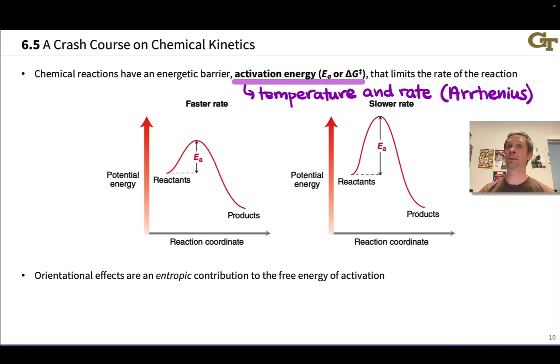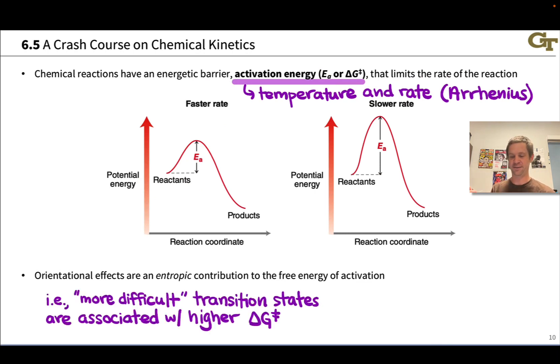And we can think about activation enthalpy and activation entropy. Orientational effects in the transition state, having to arrange things kind of just so, is an entropic contribution to the free energy of activation. And generally, just as when we talk about delta S and spontaneity, negative delta S double dagger, negative entropy of activation, is generally bad. More difficult transition states are going to have more negative delta S double dagger. That's going to lead to higher delta G double daggers and higher activation energies and slower reactions.